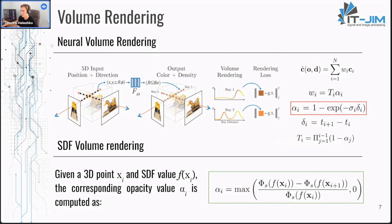Given a 3D point and an SDF value f, the corresponding opacity value alpha_i can be estimated as a difference of sigmoids of SDF values of two consecutively sampled points divided by the sigmoid of the SDF value of the current point. This way, when two points are far from any surfaces the value is close to zero, and when the points are close to the surface or on opposite sides of the surface the value tends to be one. This opacity estimation lets us compute rendering loss in a similar fashion to NeRF while using a better representation for future surface extraction — SDFs.